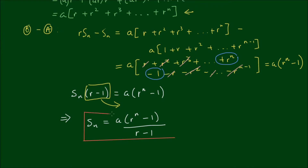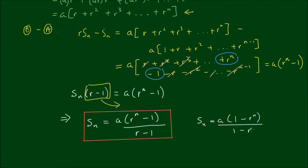So we've derived one version of the formula to find the sum of a geometric series to the nth term. You may have also seen it written as s sub n equals a times (1 minus r to the power of n) over (1 minus r), which is obtained by factoring out negative one from both the numerator and denominator and cancelling. Both versions are valid.